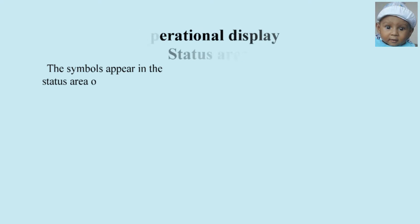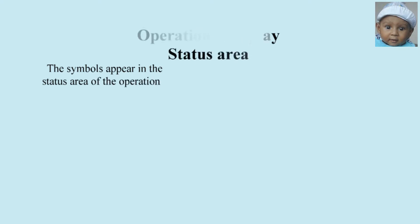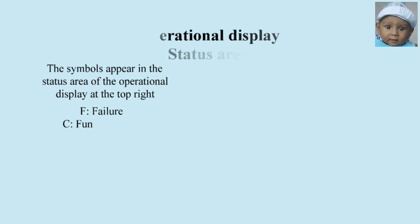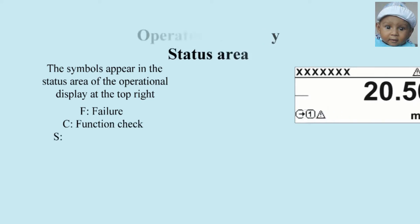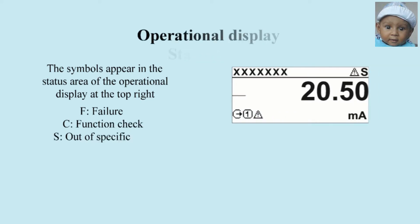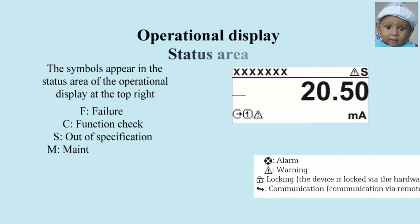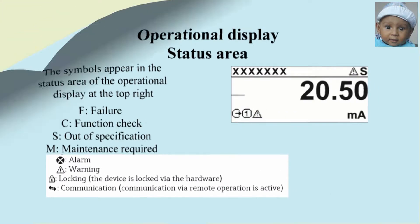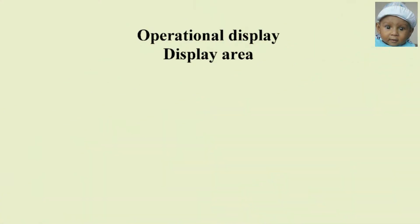Let's start with the operational display. These are the symbols F, C, S, M, Alarm, Warning, Locking, and Communication, which will show the operation status on the flow meter screen.